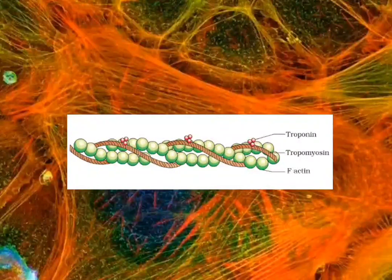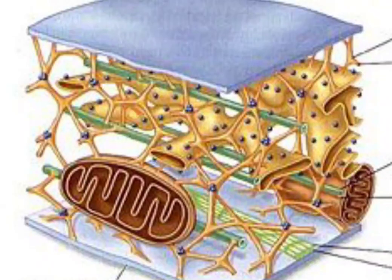Actin filaments are particularly abundant beneath the plasma membrane, where they form a network that provides mechanical support, determines cell shape, and allows movement of the cell surface, thereby enabling cells to migrate, engulf particles, and divide.